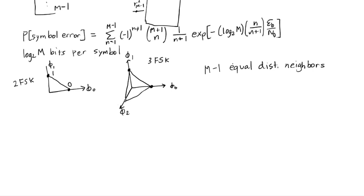So when I make a symbol error, say I send symbol 2, symbol 1, symbol 0, symbol 3 in 4 FSK would be equally likely to be the symbol that I decide in error, because they're all the same distance away.